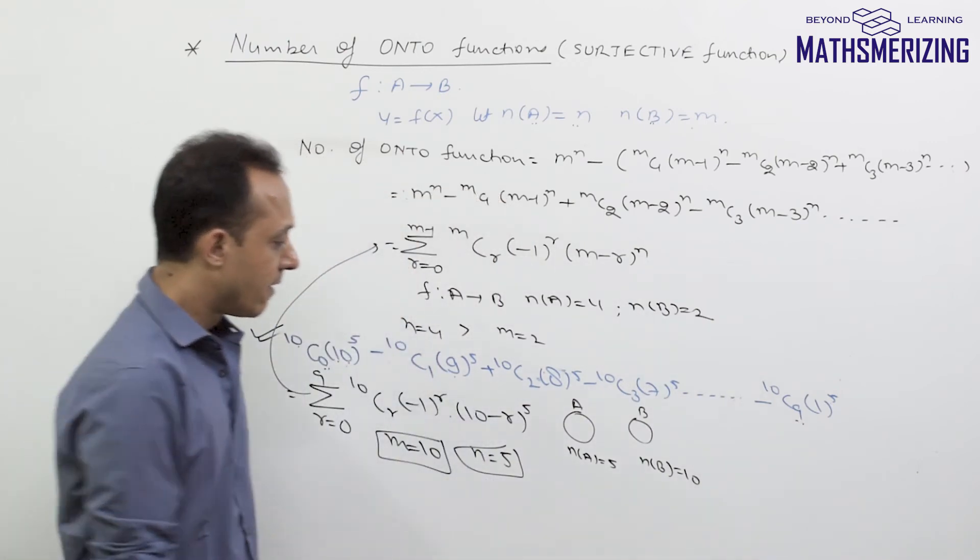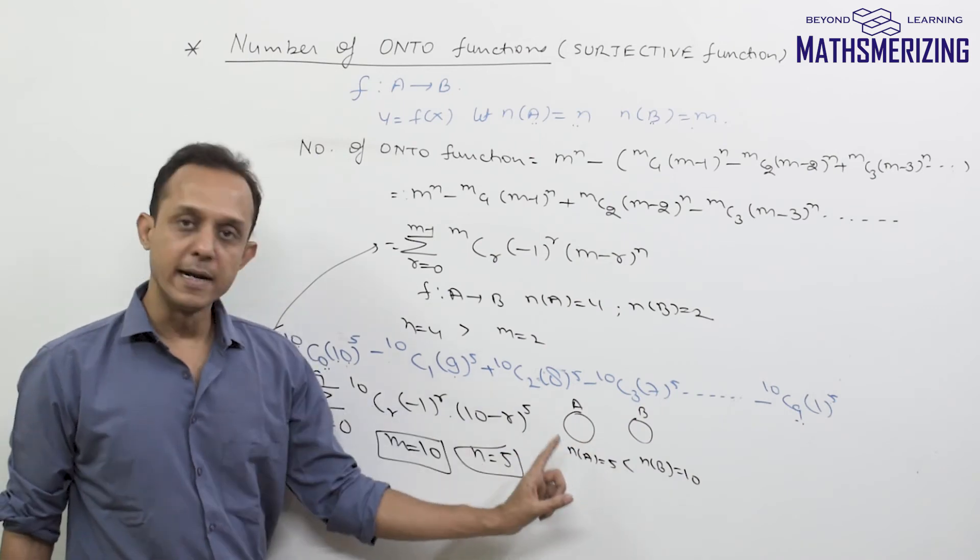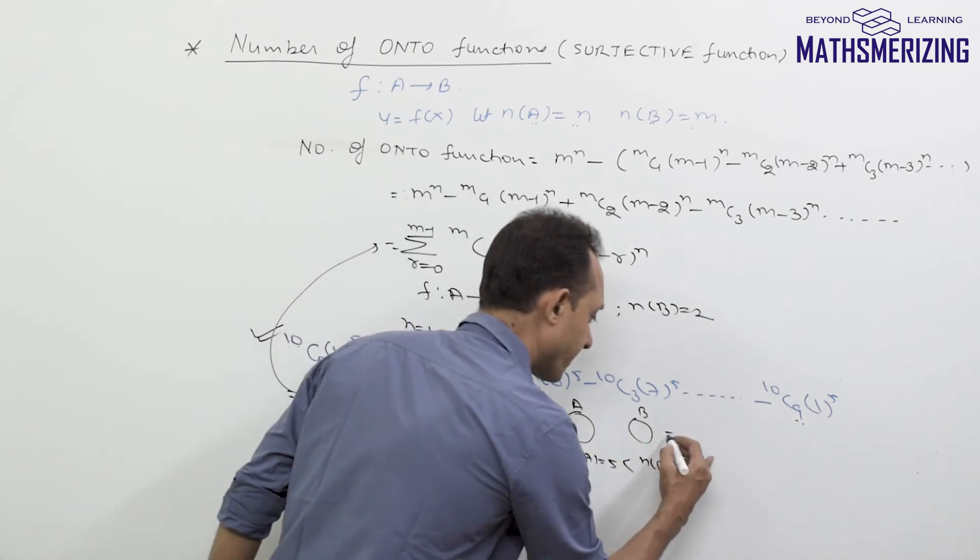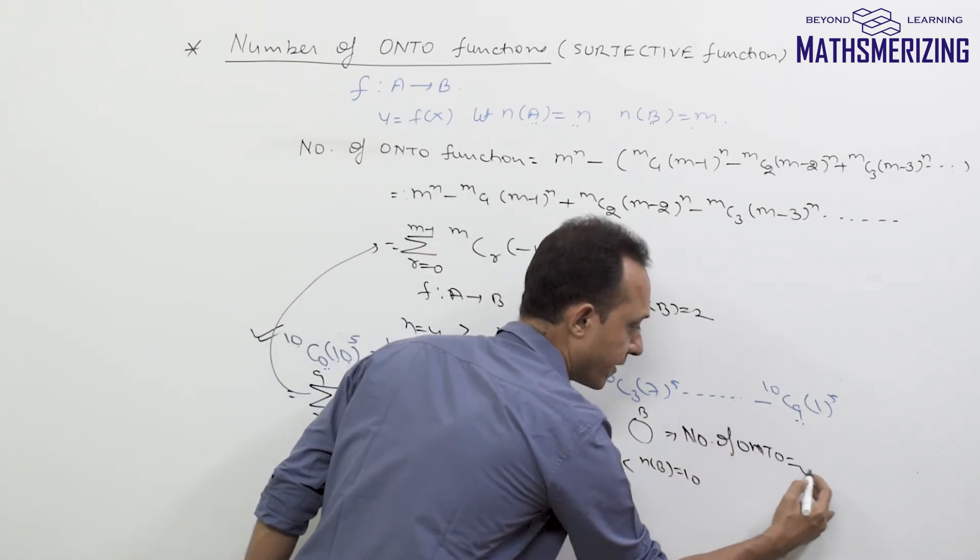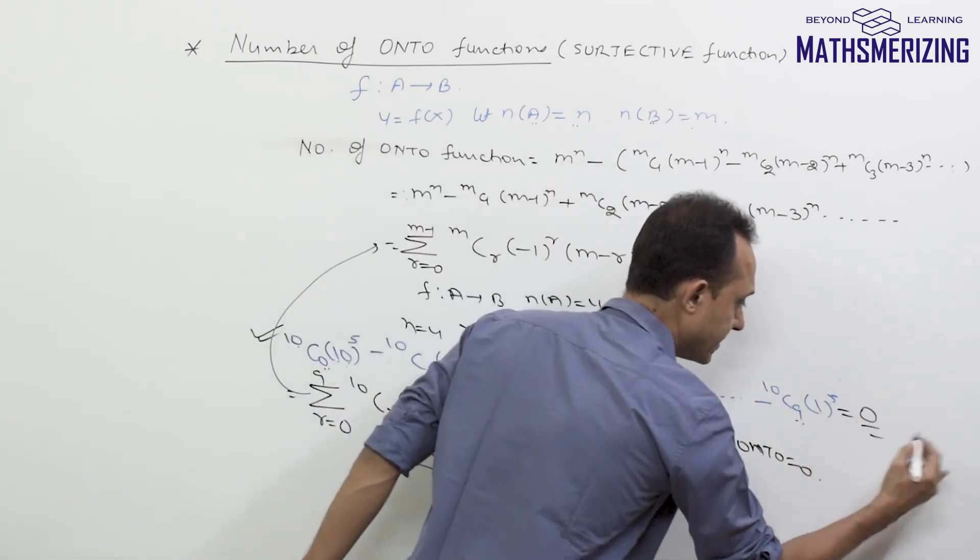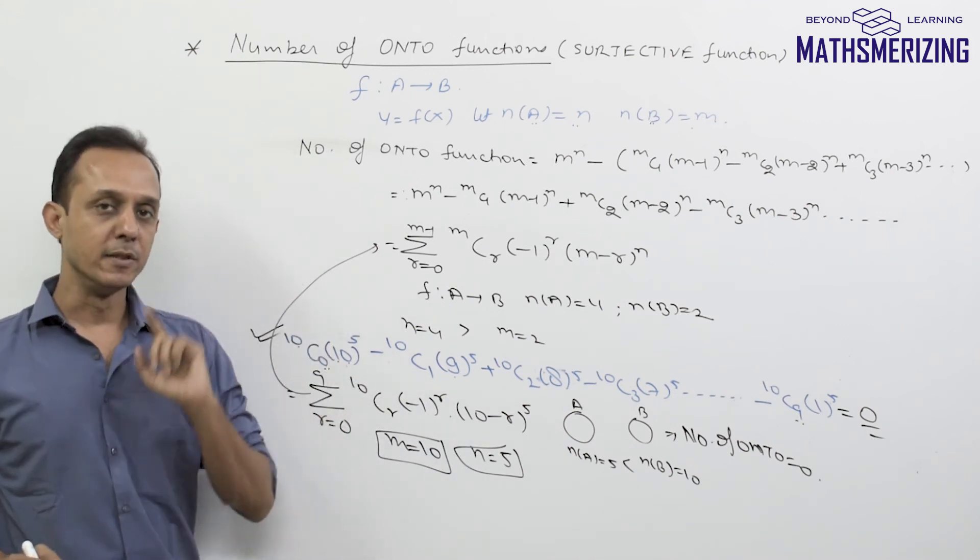We clearly know that when the number of elements in B is greater than the number of elements in set A, the total number of onto functions is simply 0. So in this case, the answer to this question is 0. And that is the reason we are studying this formula here in binomial theorem.